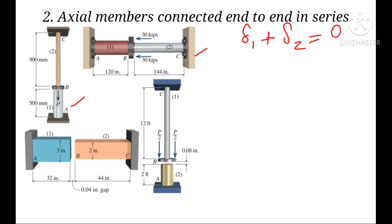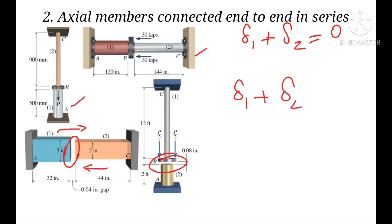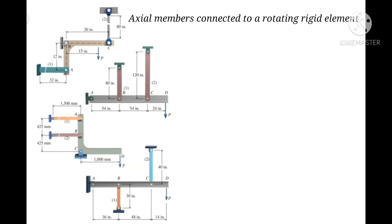But if we have a gap or clearance between the two members, the support moves as the load is applied. When we apply the load, member 1 will move to the right and member 2 will move to the left. In this case, the elongation of member 1 plus the elongation of member 2 will equal the gap.